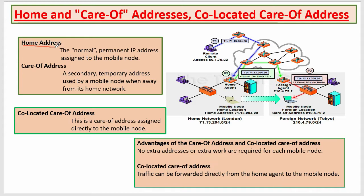The first one is home address. It is a normal permanent IP address assigned to the mobile node. The home agent is a router where a number of agents are connected to each other, and every mobile node has a home agent. Every home agent is connected to a number of devices, and each device is assigned a number — that is the home address. But if we move from one place to another, we are no longer available at the home agent; we are in a foreign network.